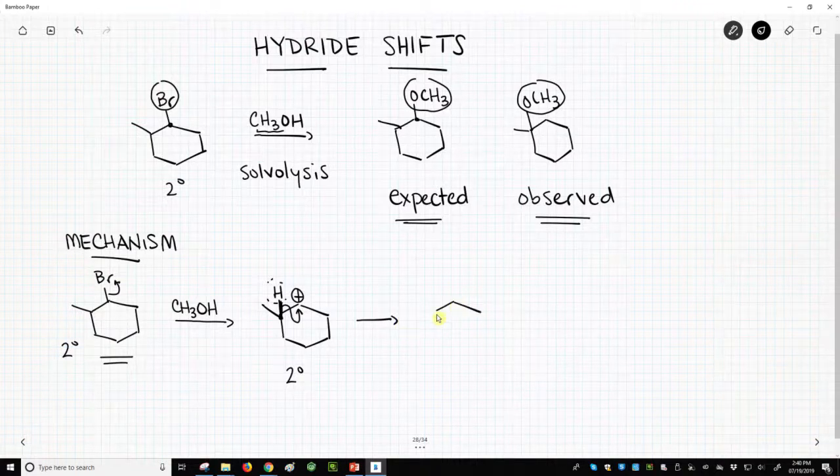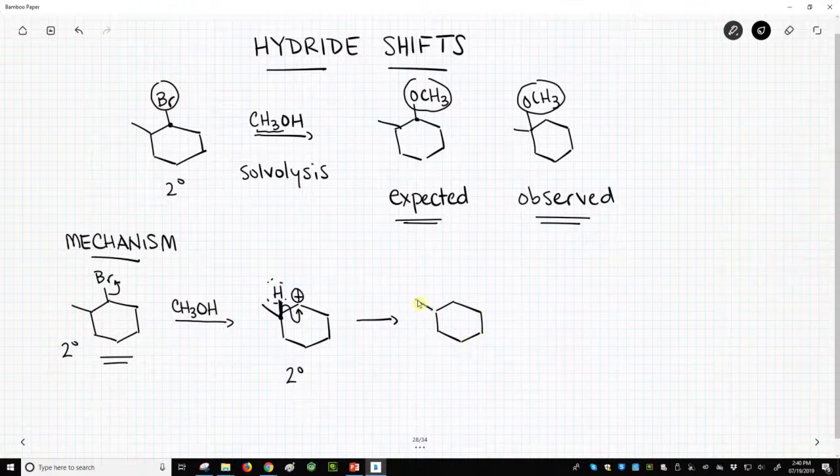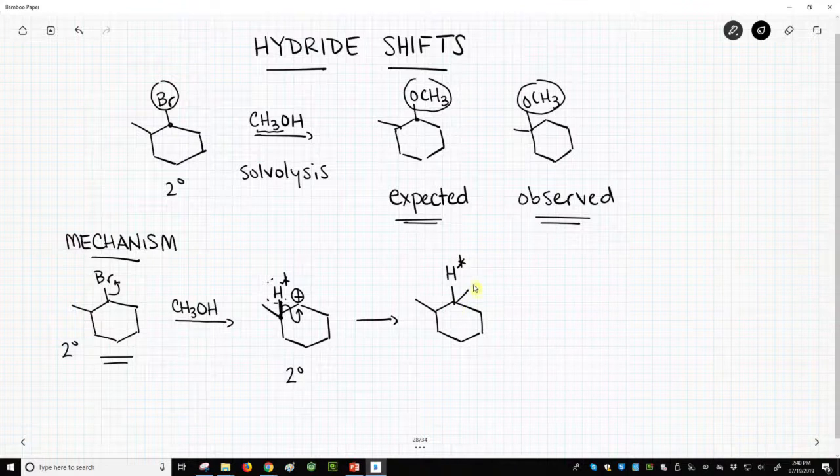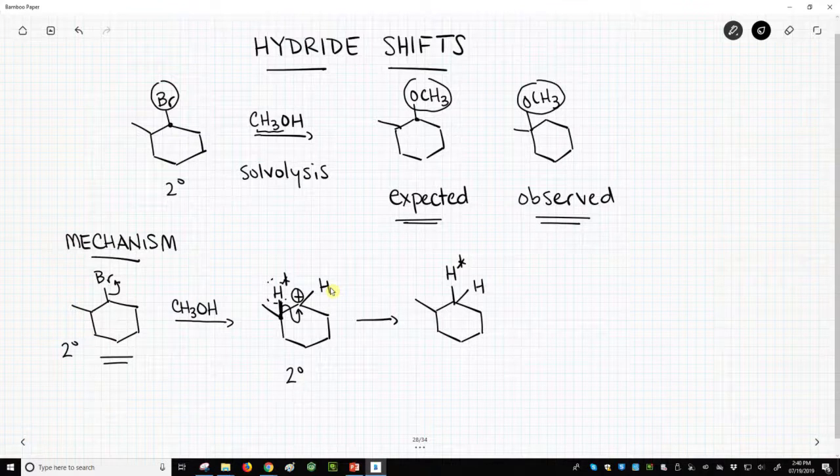Now, the interesting thing is, what is the outcome of this reaction? Well, this hydrogen - let's put a star on it - is now over here, and I don't want to slight the fact that there was already a hydrogen on this carbon to begin with. So now we have two hydrogens on there, but one of them came from a neighboring carbon.